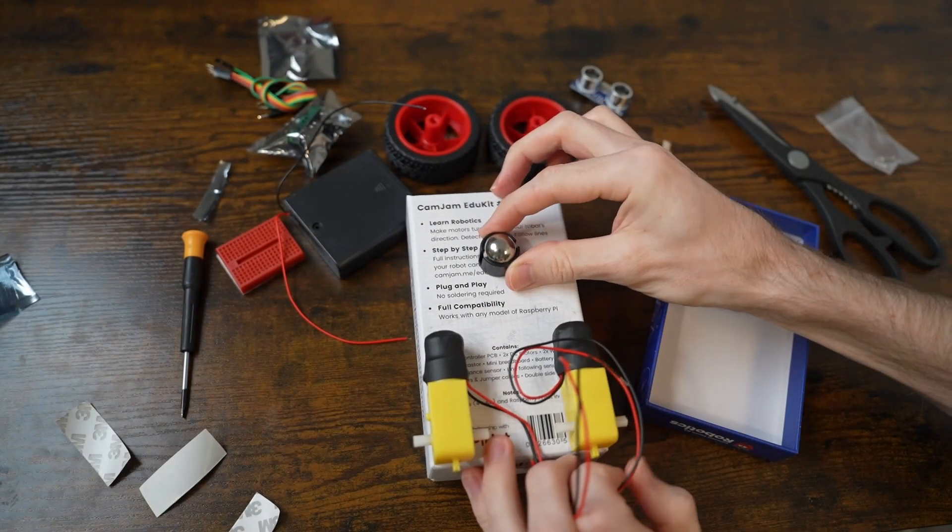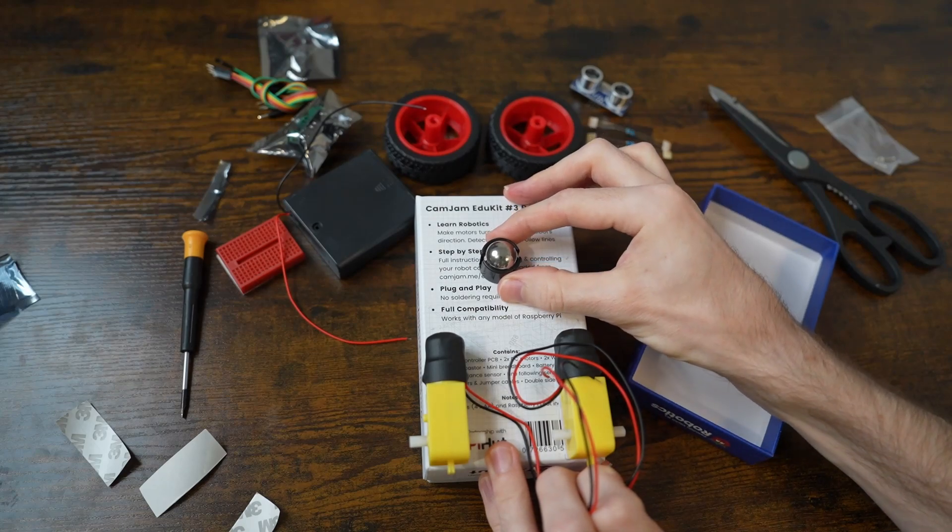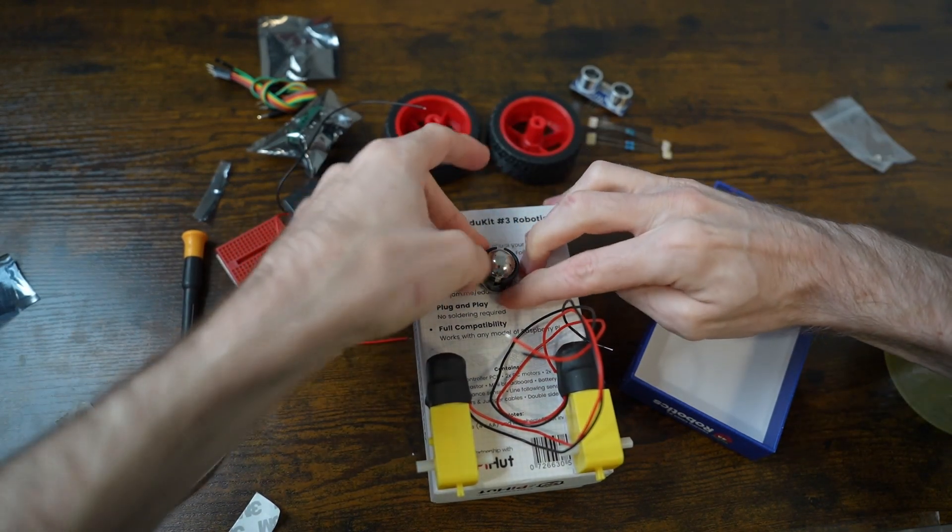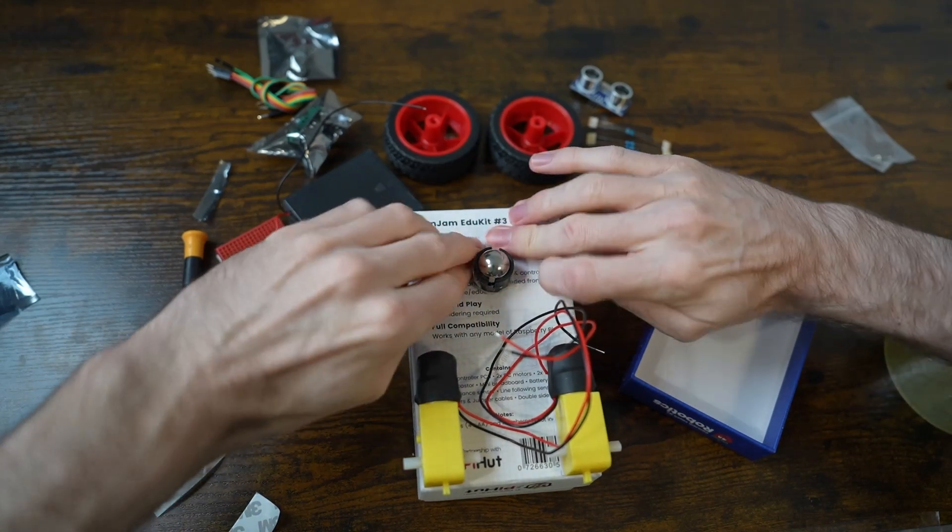Choose a position for the caster on the box. It should be horizontally centered and between the motors and the far edge. Stick it down with the double-sided tape, or in my case sellotape.